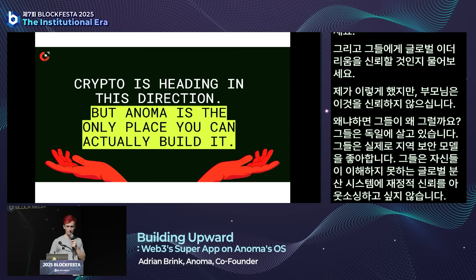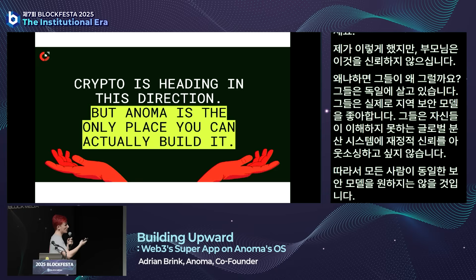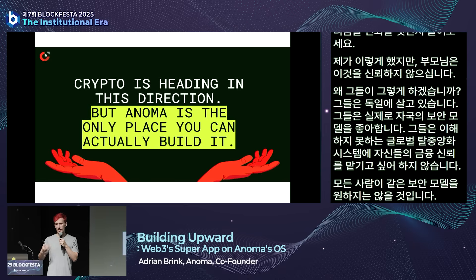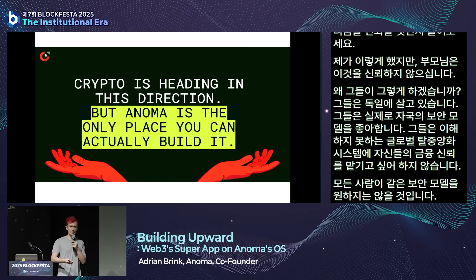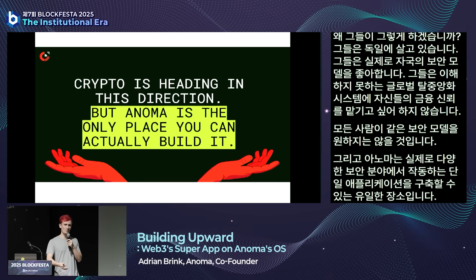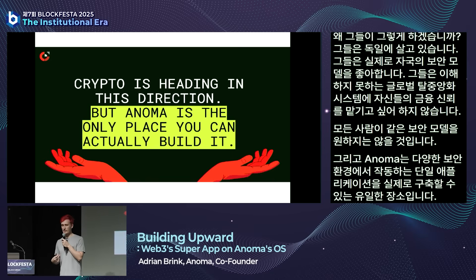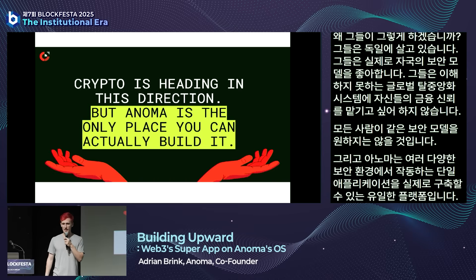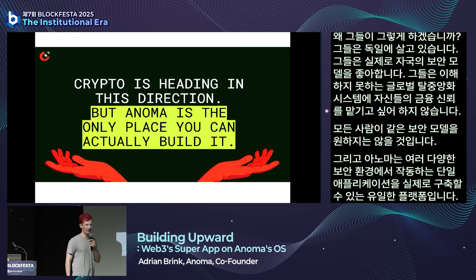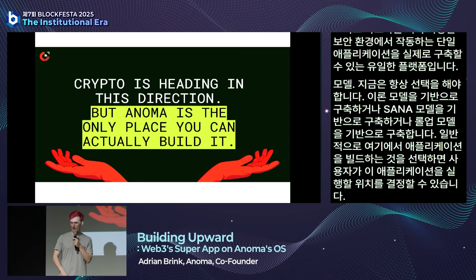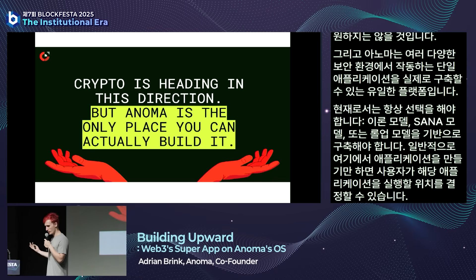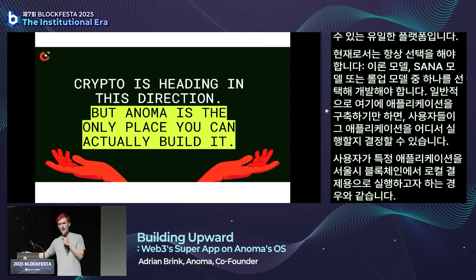Not everyone will want the same security model. Anoma is the only place where you can build single applications that work in many different security models. At the moment you always have to make the choice—you either build against the Ethereum model, the Solana model, or the rollup model. In Anoma, you can just build an application and let the users decide where they want to run it.